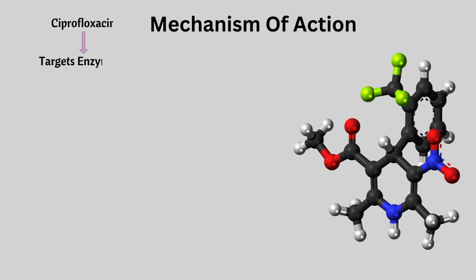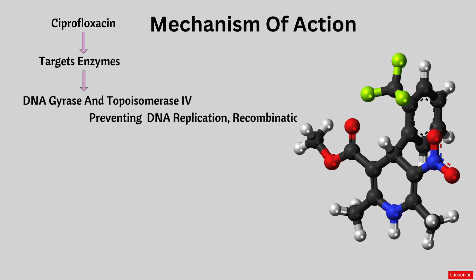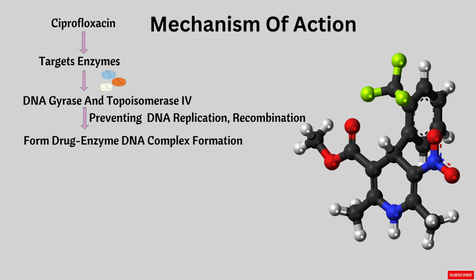Ciprofloxacin targets enzymes called DNA gyrase and topoisomerase 4, thereby preventing their DNA replication, recombination, and repair. More specifically, these enzymes help to unwind and wind the DNA strands during replication. Ciprofloxacin binds to these enzymes and forms a drug-enzyme-DNA complex.